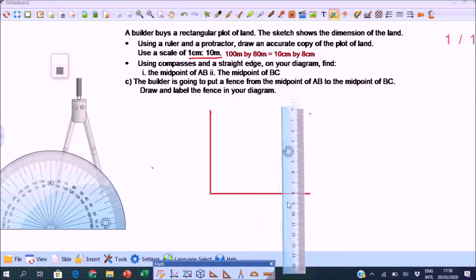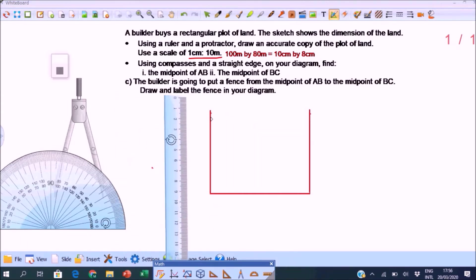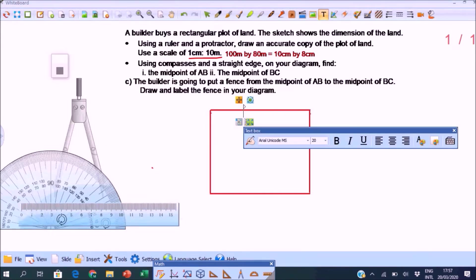And lastly, just connect the end points of those two lines. That should be 10 cm. Yes, it is 10 cm. So this is a copy of the rectangular lot. 10 cm by 8 cm.